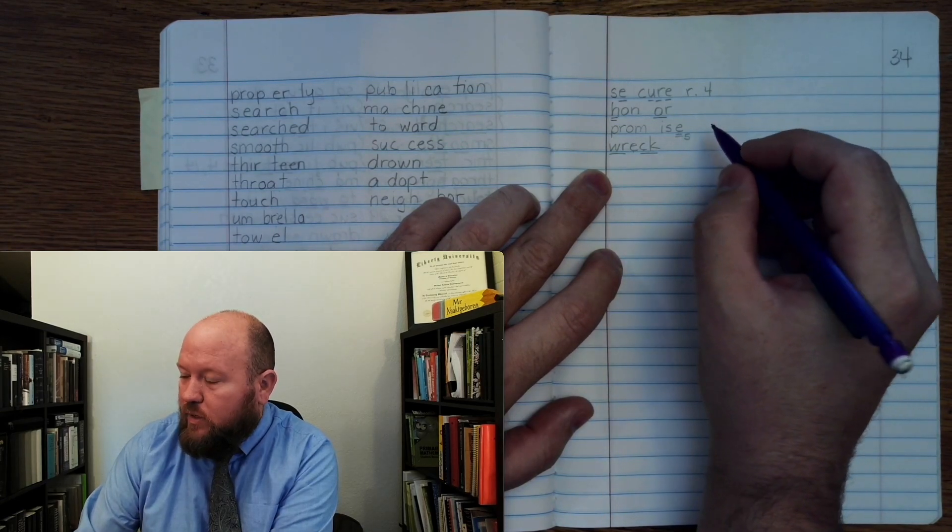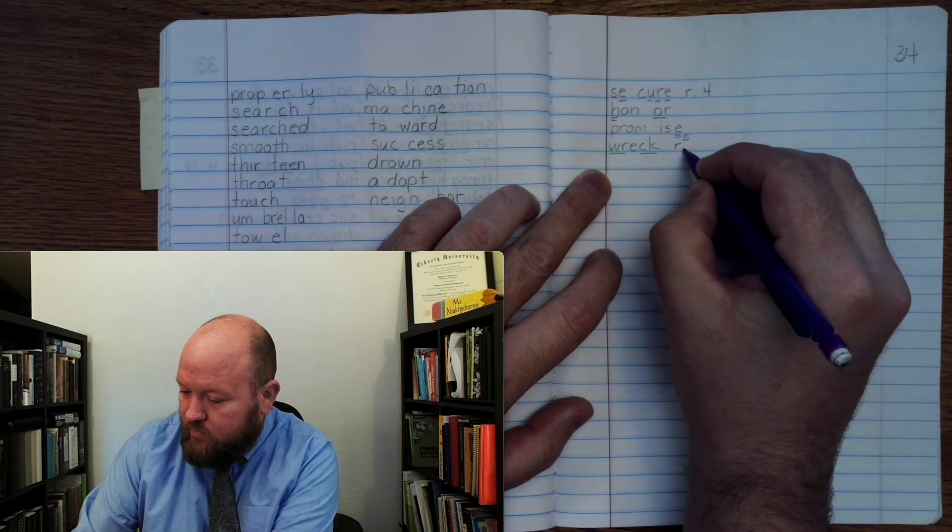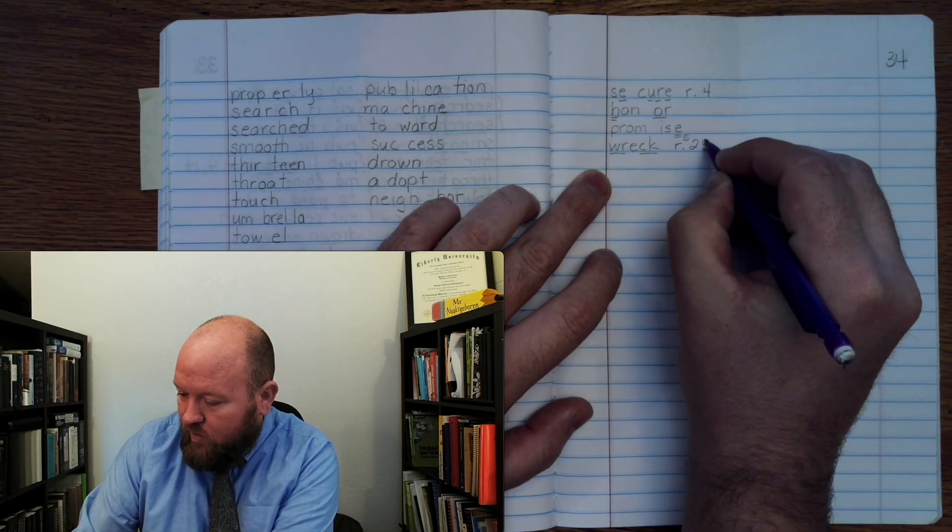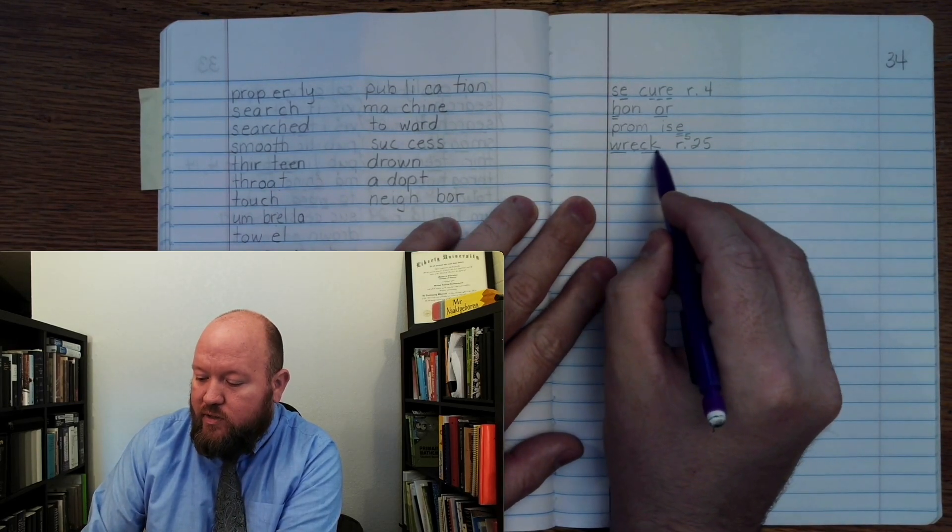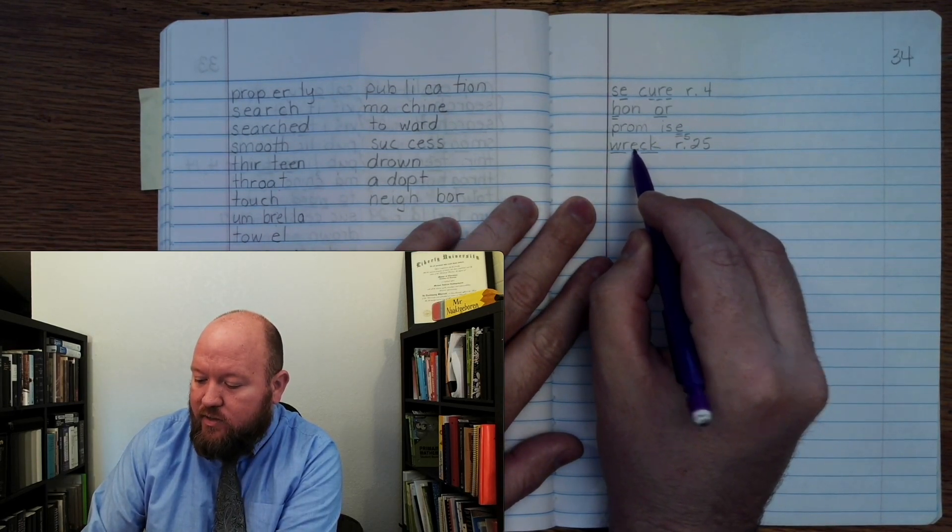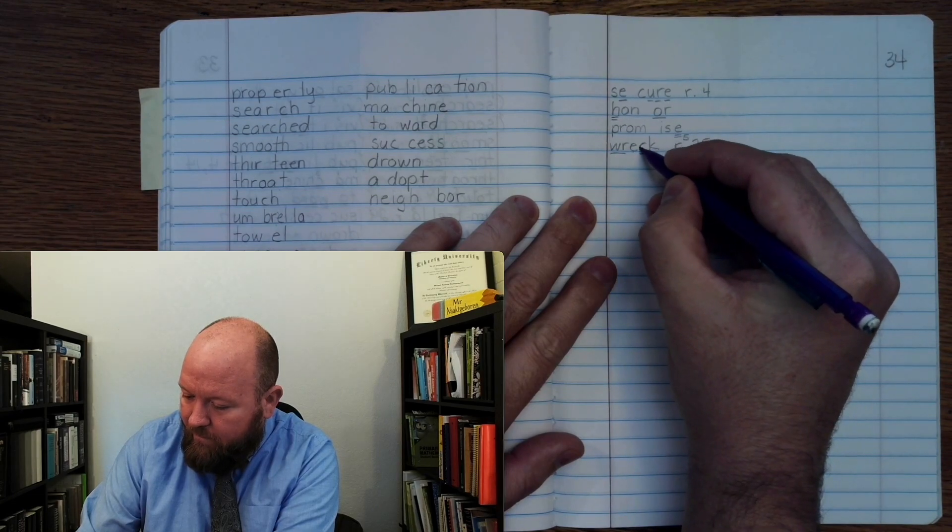Rule 25. All right? You can only use a CK after a single vowel that says its first sound.